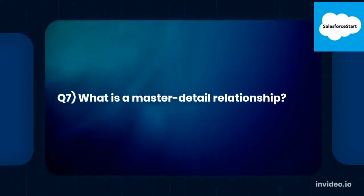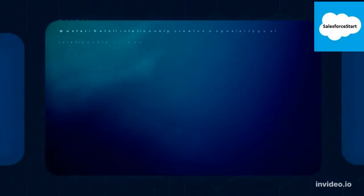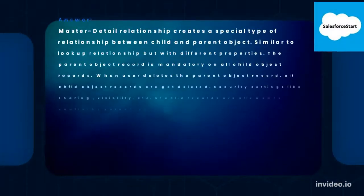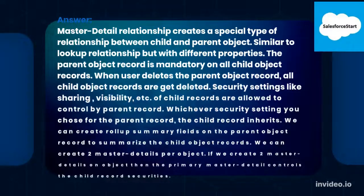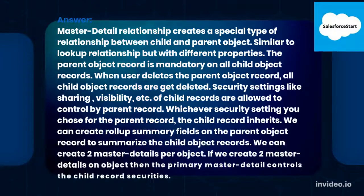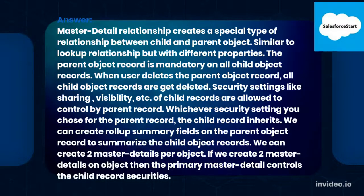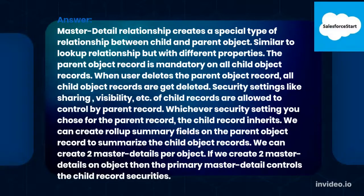Q7: What is a master-detail relationship? A master-detail relationship creates a special type of relationship between child and parent objects, similar to a lookup relationship but with different properties. The parent object record is mandatory on all child object records. When a user deletes the parent object record, all child object records are deleted. Security settings like sharing and visibility of child records are controlled by the parent record — whichever security setting you choose for the parent record, the child record inherits.